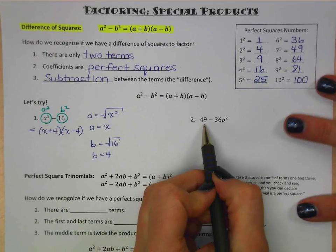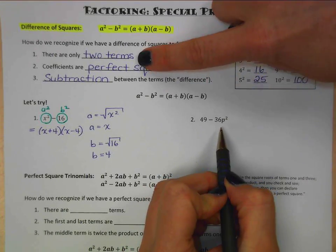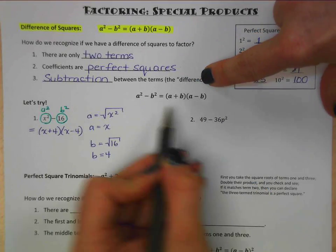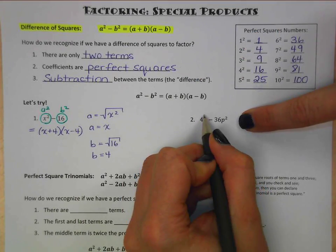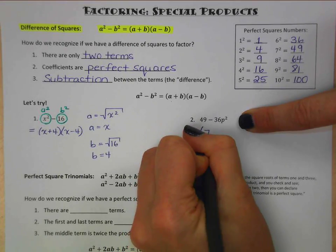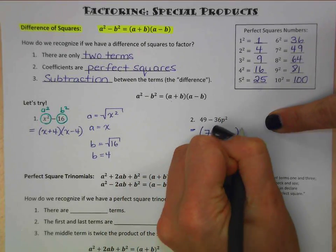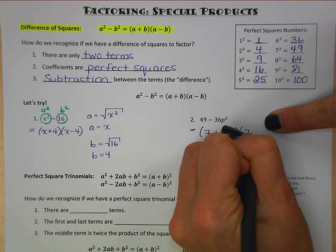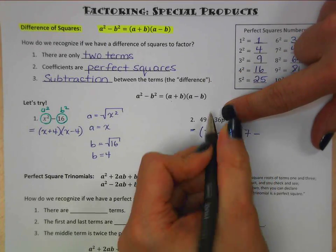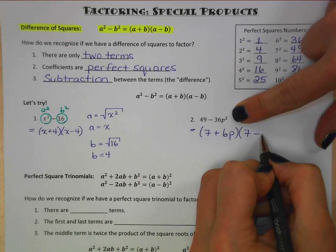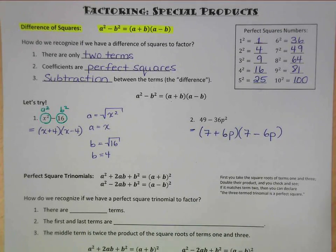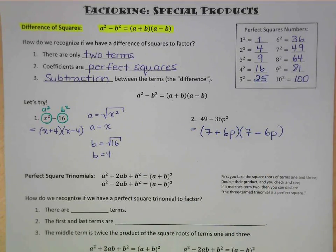Let's try another one: 49 minus 36p squared. Yes, there are two terms. 49 is 7 times 7, so that's a perfect square. 36 is 6 times 6, so that's a perfect square. And there is a subtraction between them. So we know that 49 is a squared, and we need to find just a. The square root of 49 is 7, so that goes in the spot of our a's — one bracket is plus and one bracket is minus. And then b is the square root of 36p squared: square root of 36 is 6, and square root of p squared is p. So b is 6p, and we get (7 plus 6p)(7 minus 6p). Done.